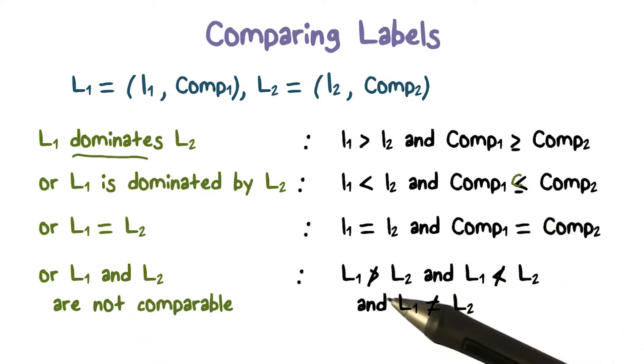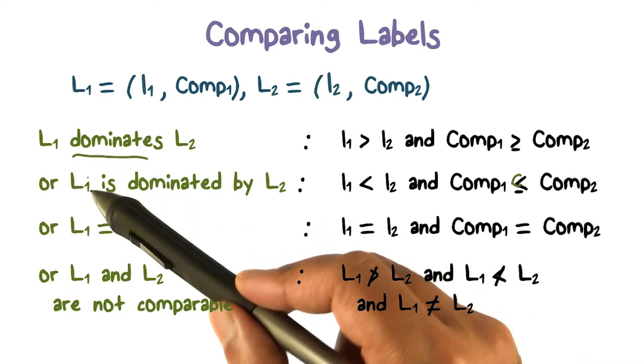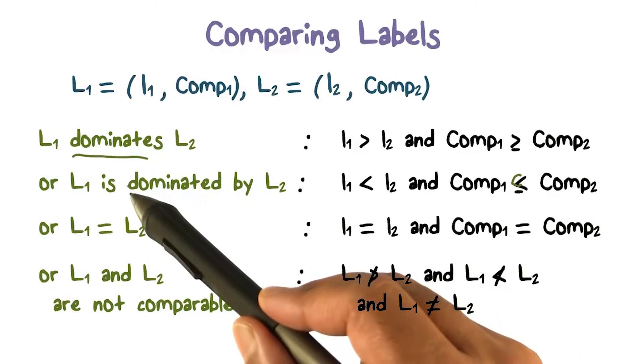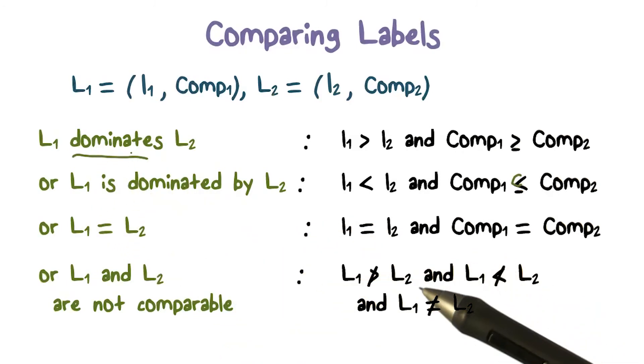So if L1 and L2 are not comparable, and what do we mean by that? That means it's not one of the first three. They're not equal, and neither one dominates the other one. Then we say that they're not comparable.